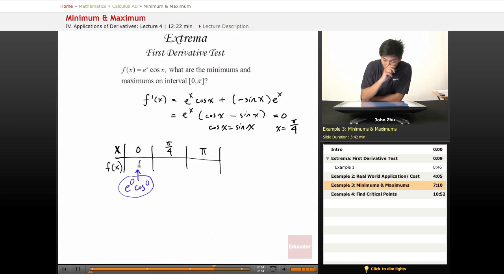At pi over 4, e to the pi over 4 cosine of pi over 4. We know that this is 1.55.